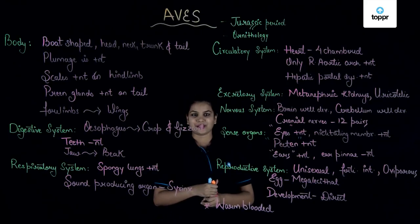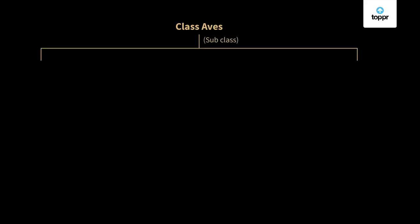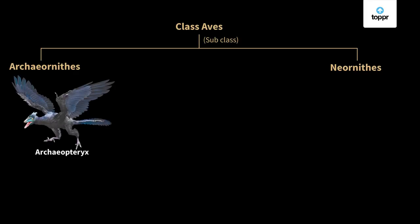Moving to classification, the class Aves is divided into two subclasses: Archaeornithes and Neornithes. Archaeornithes are primitive, lizard-like birds belonging to the Jurassic period — all members of this subclass are extinct. Their wings were poorly developed with limited flying capacity, and the keel was absent in the sternum. The most common example is Archaeopteryx, also called the lizard bird, considered the connecting link between reptiles and birds.